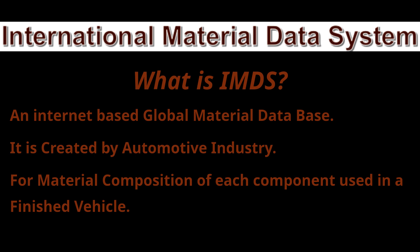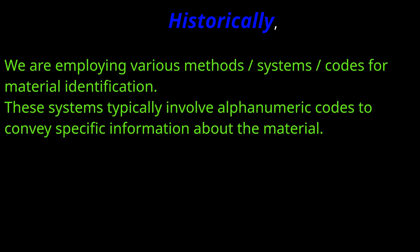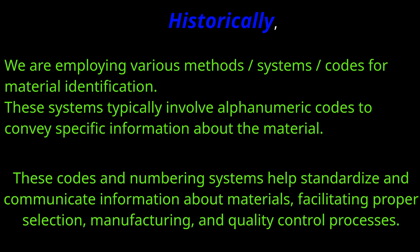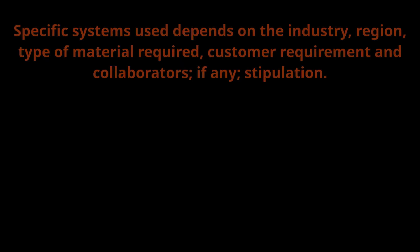There are various methods, systems, or codes for material identification. These systems are based on alphanumeric codes to convey specific information about a material. These codes and numbering systems help to standardize and communicate information of materials, facilitating proper selection, manufacturing, and quality control. Specific systems are used as per the industry, region, type of required material, customer requirement, and collaborator stipulations.